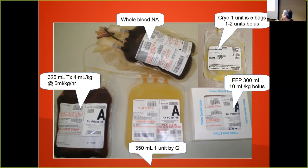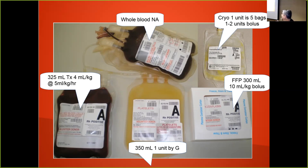It's important to know what volume you're transfusing: 4 ml per kg will give you 1 gram higher in hemoglobin for red cells. Plasma is about 10 ml per kg. Platelets are about 350 ml, and in our system they're all pheresis platelets, so it would be 1 pheresis unit given by gravity. Cryoprecipitate: 1 unit is typically 5 bags, and for an adult it would be 1 to 2 units.